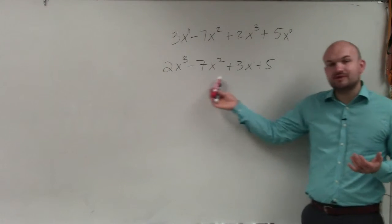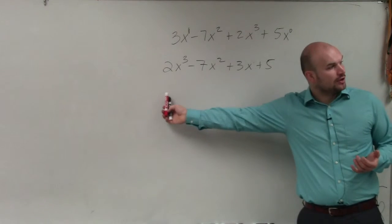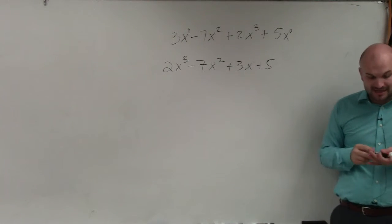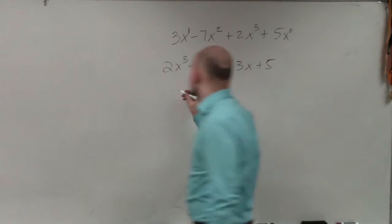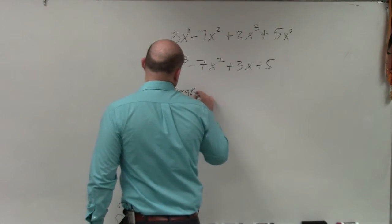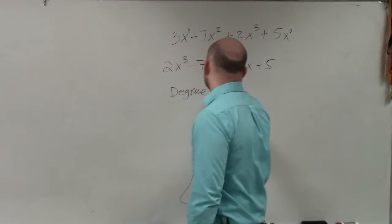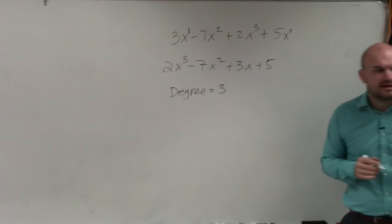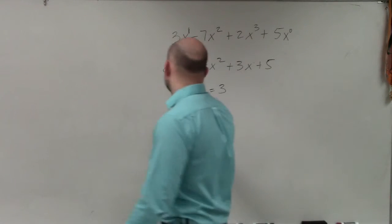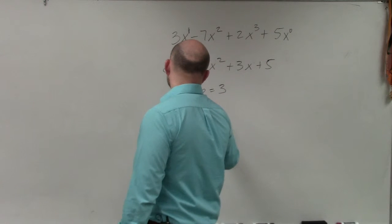Once you've rewritten this, this is what we call descending power order. Once we've written in this format, now we need to identify the degree and the leading coefficient. The degree is that largest power, which in this case is 3. And the leading coefficient, in this case, is 2.